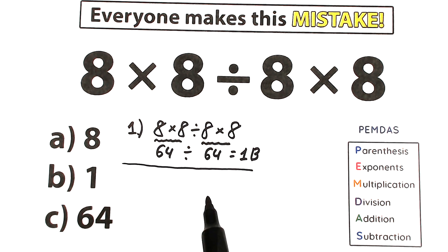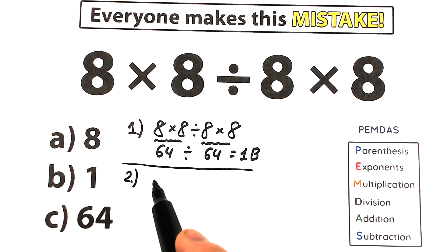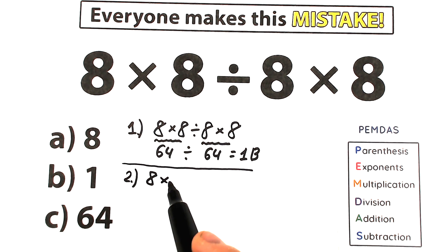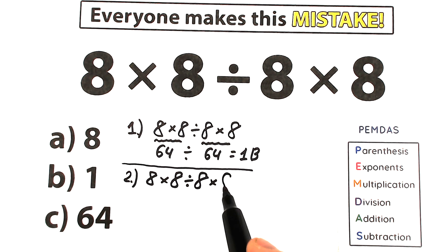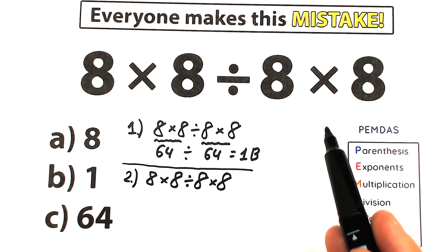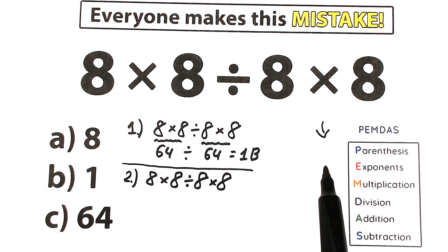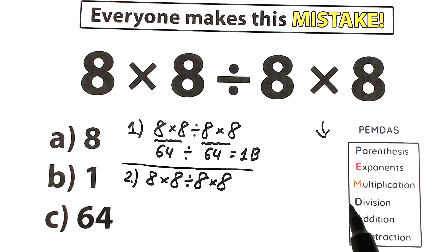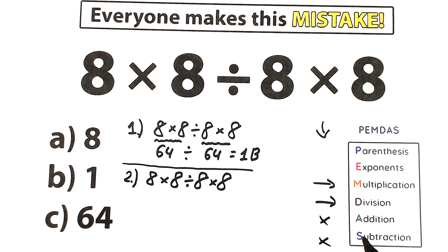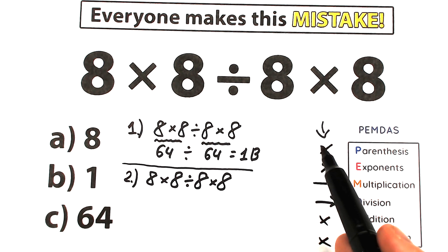PEMDAS is the most popular order of operations in the world. In this second interpretation, let's solve the challenge according to PEMDAS. We have 8 times 8 divided by 8 times 8. PEMDAS works from top to bottom: first, parentheses; next, exponents; next, multiplication and division as a group; and the last step is addition and subtraction. Scanning our challenge, we have only multiplication and division — no addition, subtraction, exponents, or parentheses.